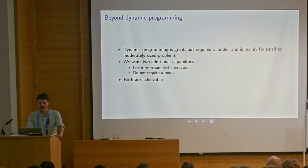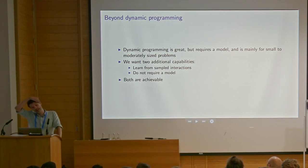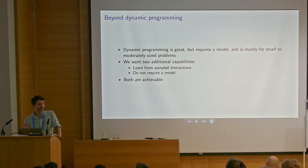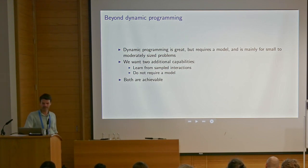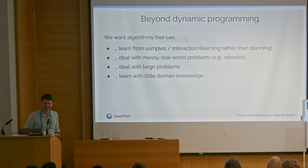Dynamic programming is great but it does require a full model, and therefore it's mainly applicable to small or moderately sized domains. So we want two additional capabilities: we want to be able to learn from sampling interactions, and we do not want to require a model. Sampling is important for two reasons: one is that it doesn't require a model, and two is that even if you do have a very big model you still probably want to sample because it's just too big to reason about directly. Both of these are achievable. We want algorithms that can learn from samples and interaction with the world, rather than only by planning. We want to be able to deal with real world problems which often have messy inputs and outputs — for instance think of a robot which just has a noisy camera sensor.